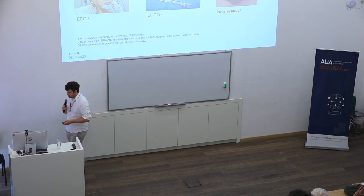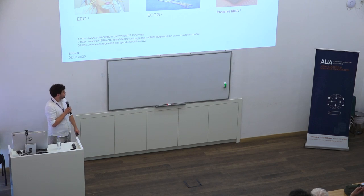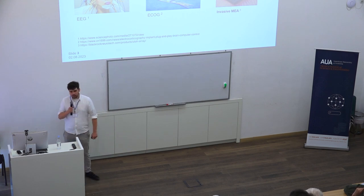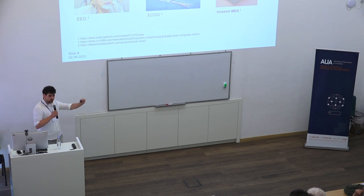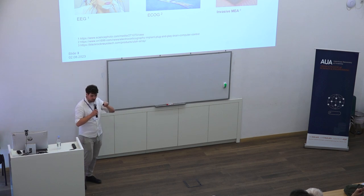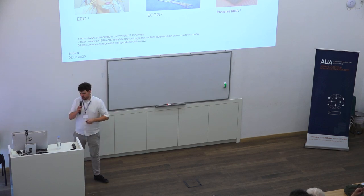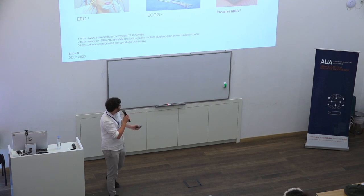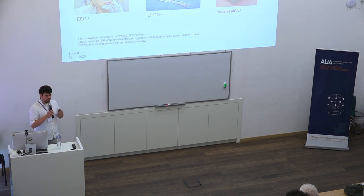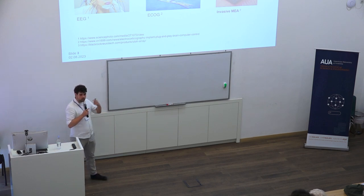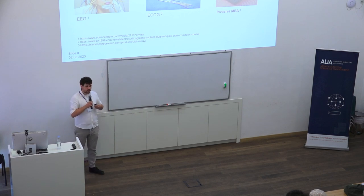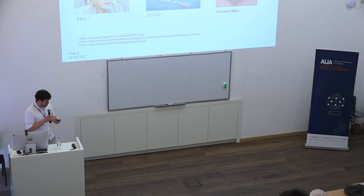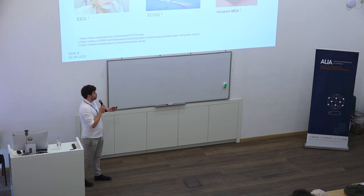Then there are invasive multi-electrode arrays. This one is from BlackRock — the BlackRock Utah array. It has 96 electrodes and is four by four millimeters. It's placed inside the brain, with the electrode tips penetrating slightly into brain tissue. We're still measuring a sum signal, so if there are multiple neurons around an electrode, we don't know which neuron fired. Detecting which neuron is actually firing is the process called spike sorting.